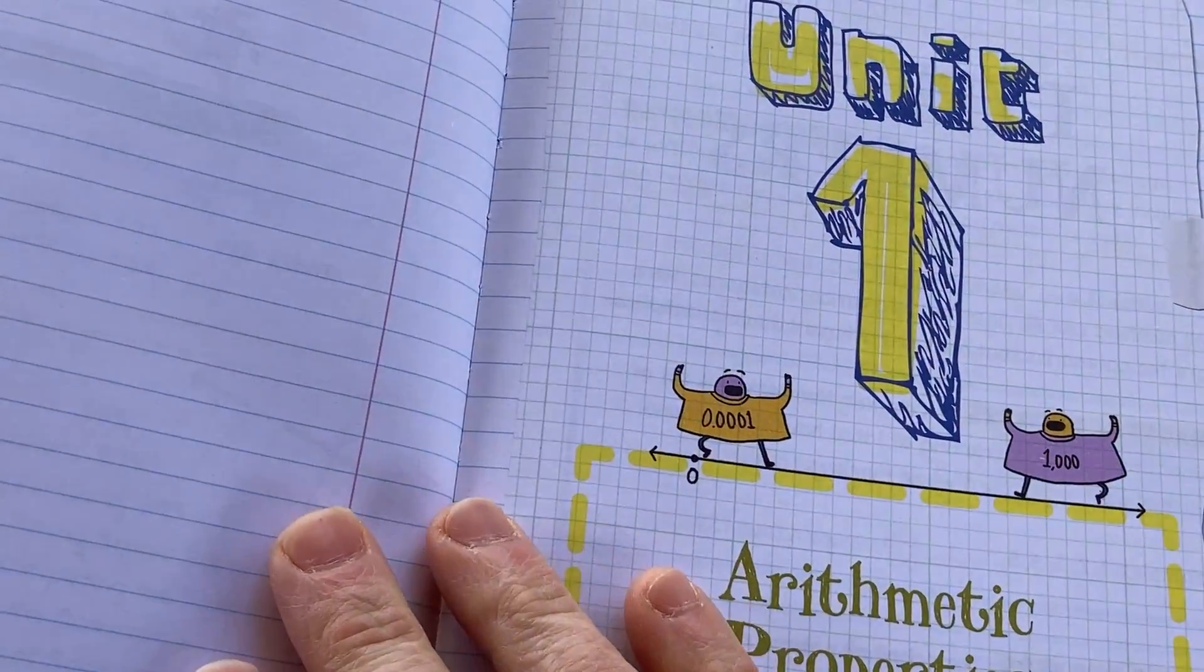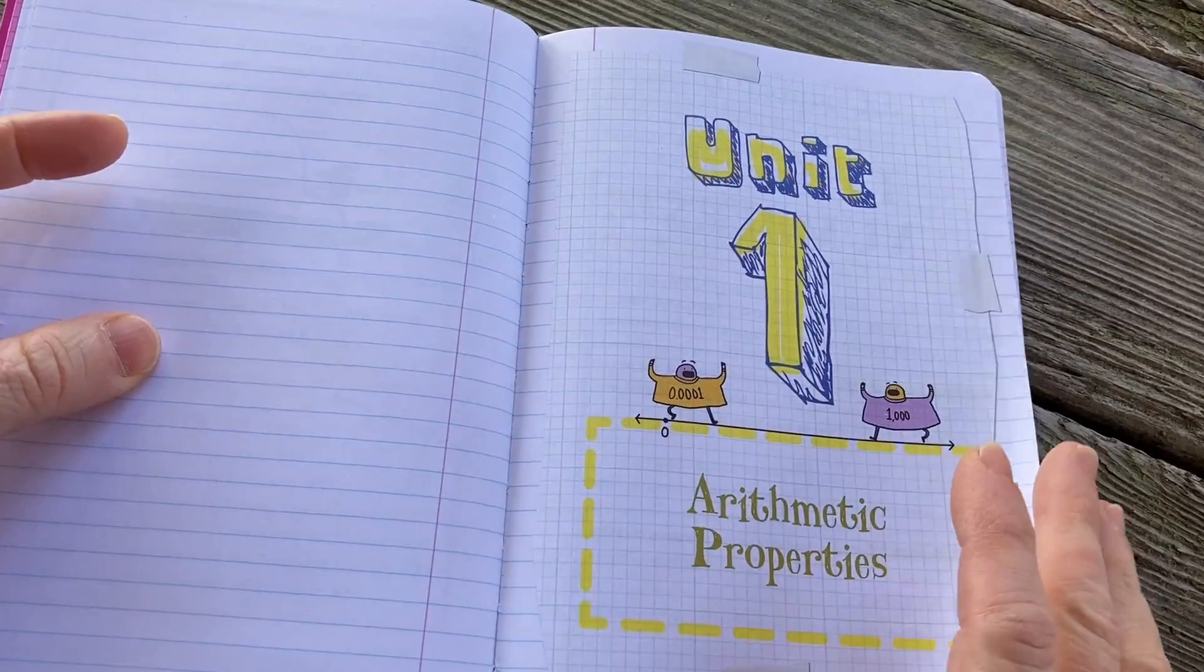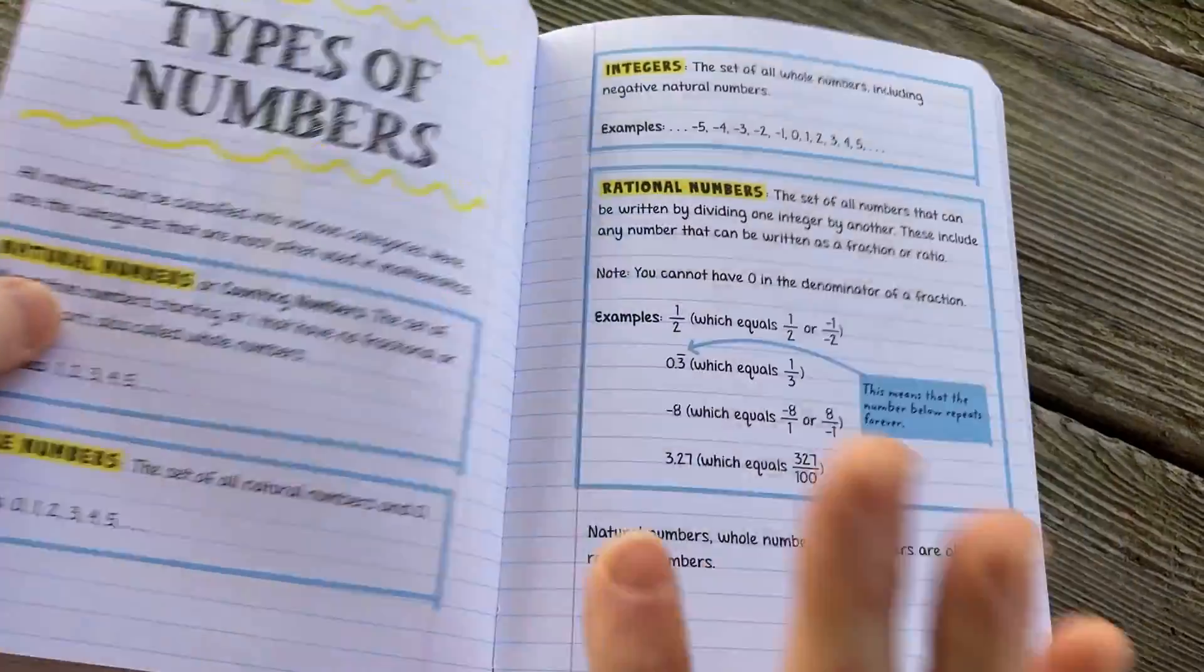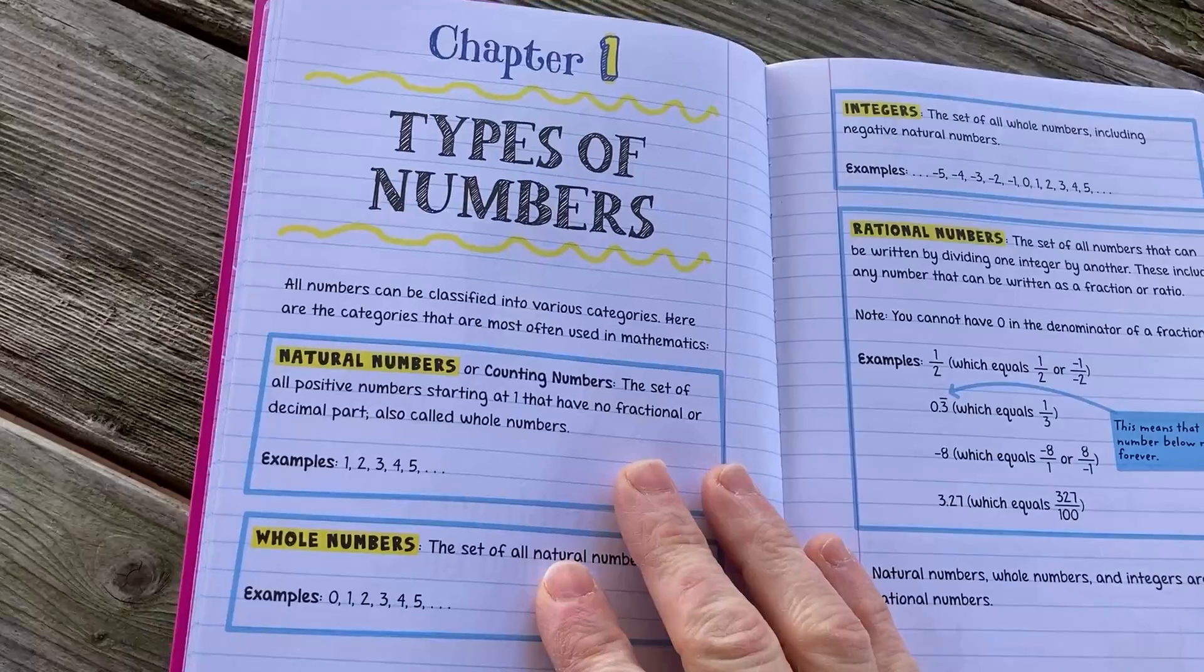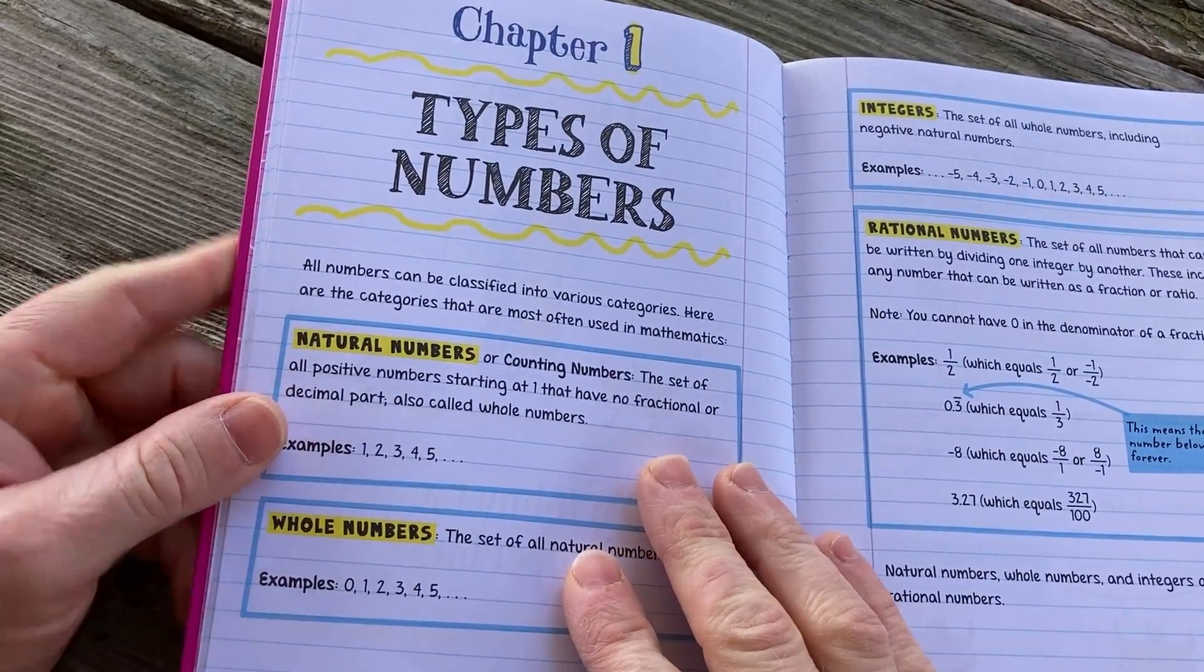By the way, I'll leave a link in the description in case you want to check out this book. Very inexpensive. That's one of the reasons I bought it. It's so cheap. So I was like, why not? It's a pre-algebra book for, I forgot how much I paid, but it was very, very inexpensive for an actual book.